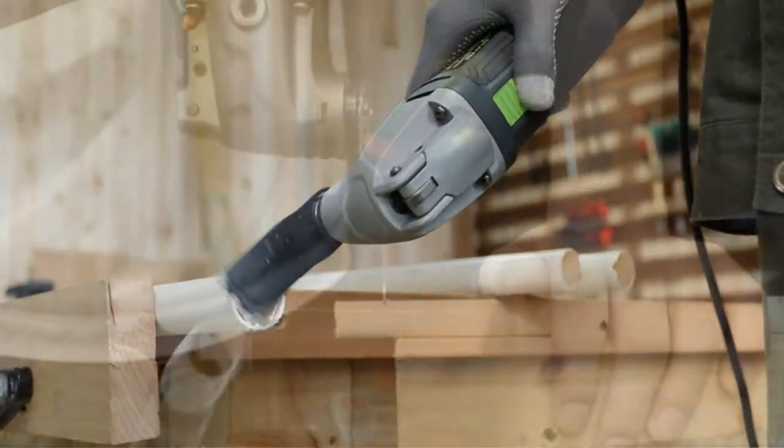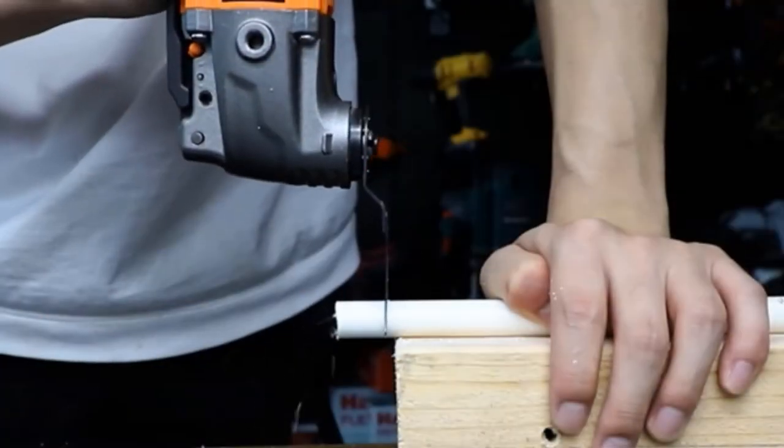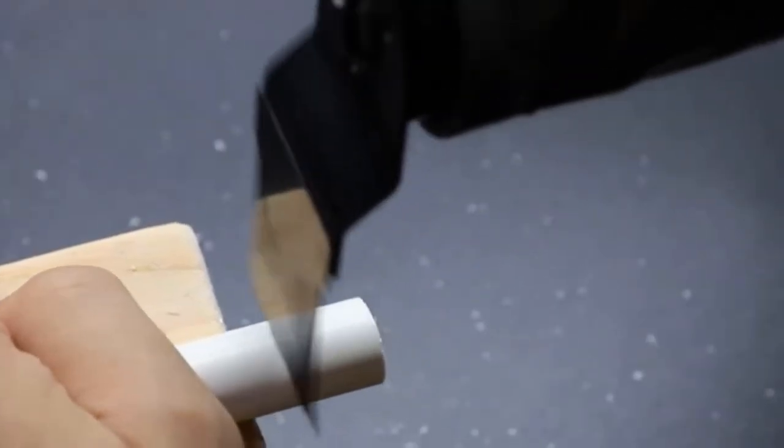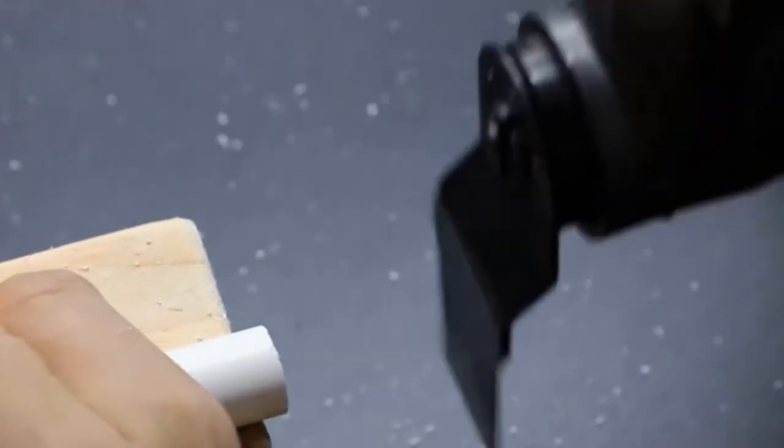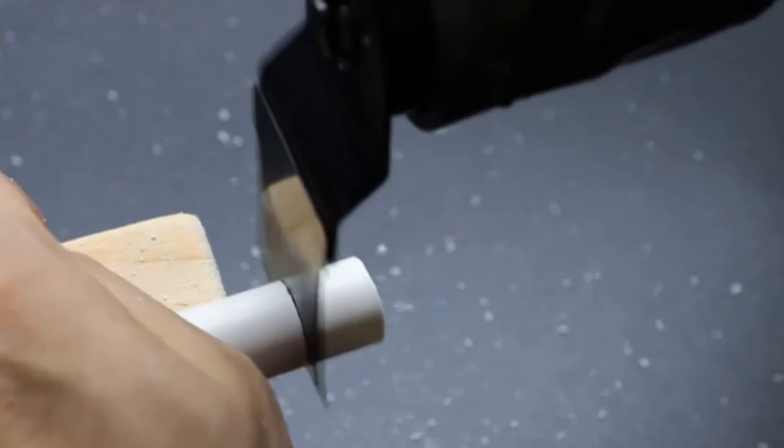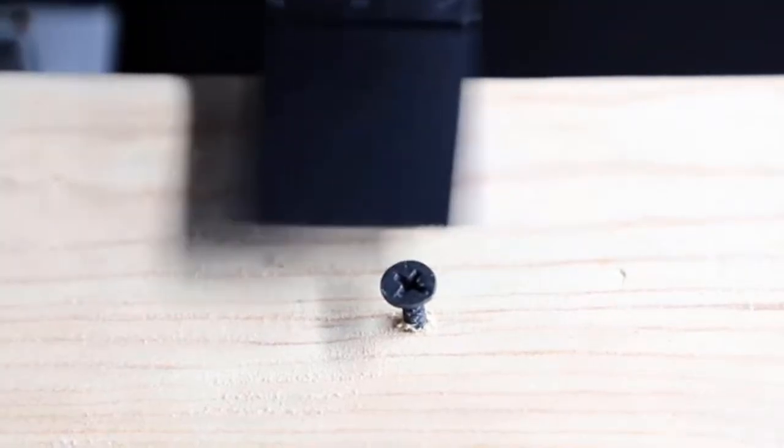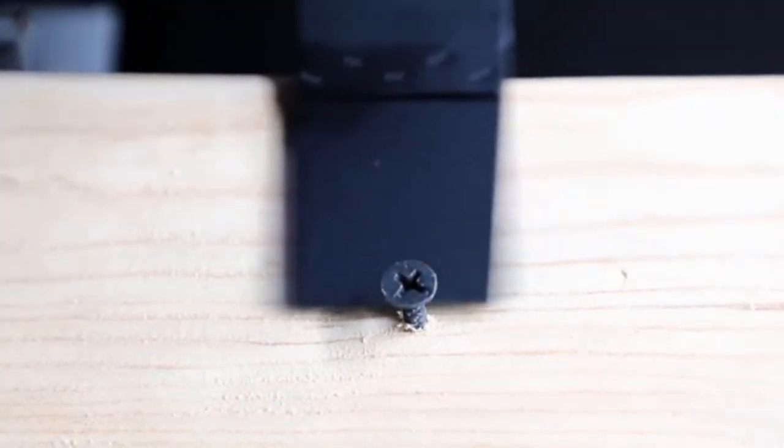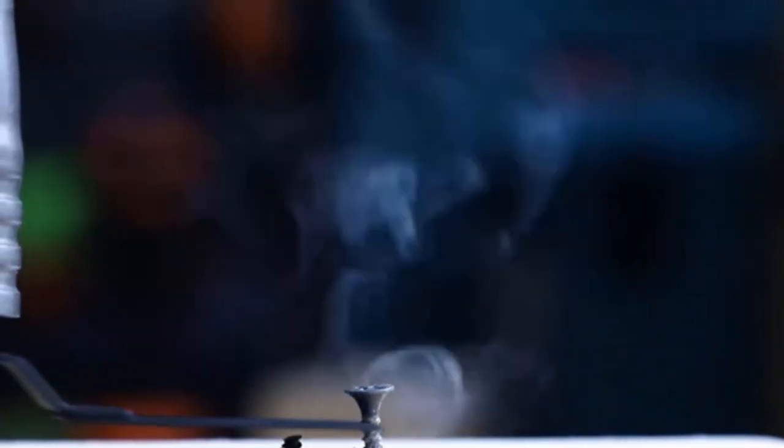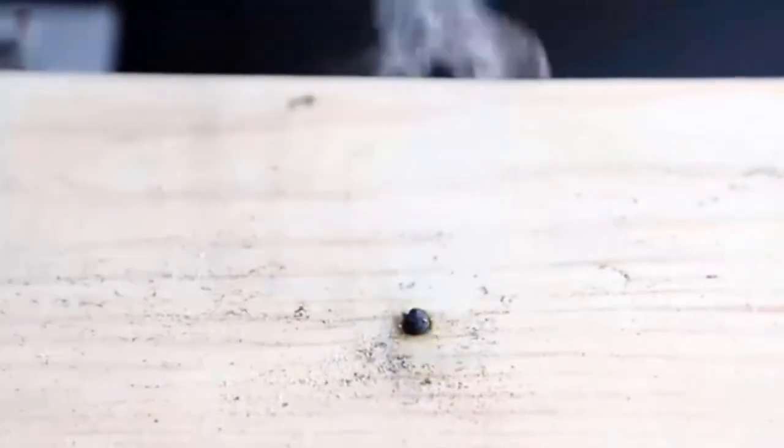If you want to remove rust from metal, this oscillating multi-tool would be perfect for you. Do you need to cut any drywall? Then this is the tool you need. Other works you can do with this tool include removing mortar, scraping adhesive, removing old paint, and much more.